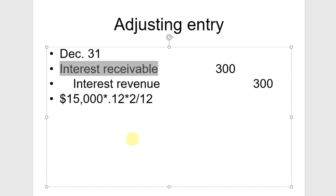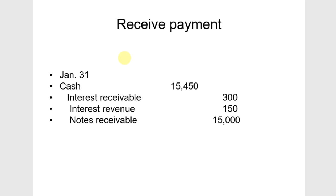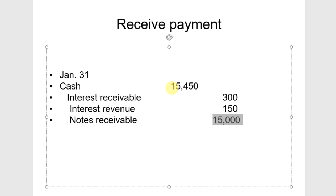The next journal entry is on January 31 to actually receive the payment. The full amount received is the repayment of the $15,000 principal plus $450 interest — so there's our cash debit. We have an interest receivable account outstanding from December 31, so we credit that to bring it to a balance of zero, and then the remaining interest earned in January is $150.